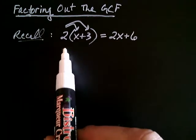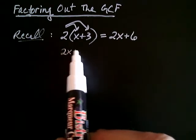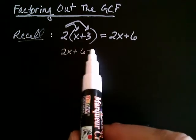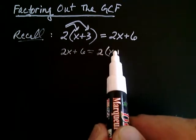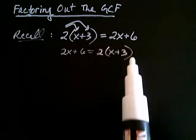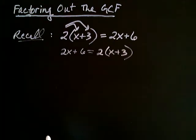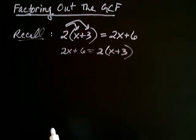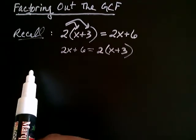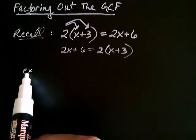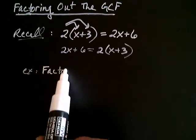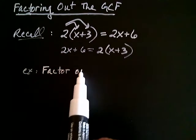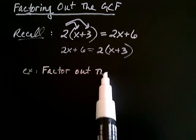That is, how are we going to be able to begin with 2x plus 6 and write that as 2 multiplied by x plus 3? And the answer is, we begin with what's called factoring out the GCF. So let's see an example of how this works.